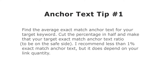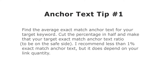The average exact match anchor text is really what we want to focus on when we're analyzing our competitors' anchor text, because what we're trying to do is find that threshold. For example, if we average out our competitors' anchor text and we find that the average exact match anchor text is about 10%, we know that we can probably go up to 10% without getting hit by any type of penalty.